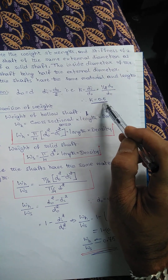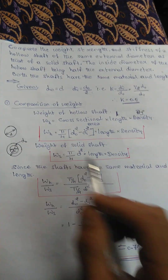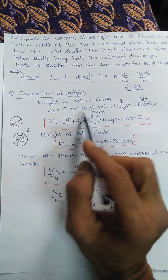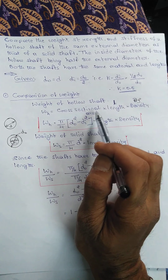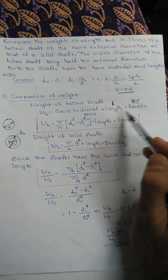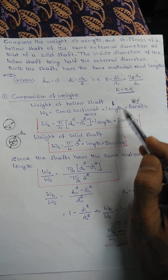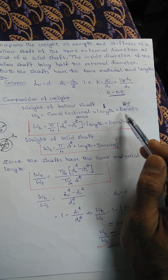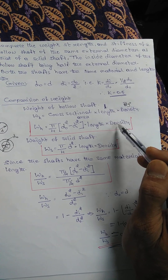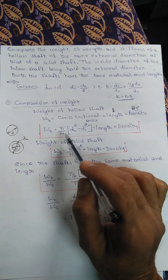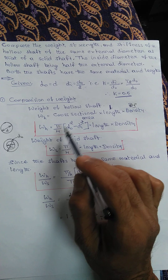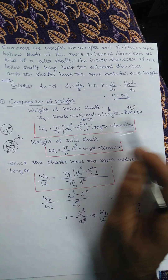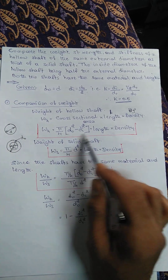First, comparison of weight. The weight of the hollow shaft equals cross-sectional area times length times density. Since length and density are the same for both shafts, we can neglect those terms. So for the hollow shaft: (pi/4) * (d_o^2 - d_i^2).